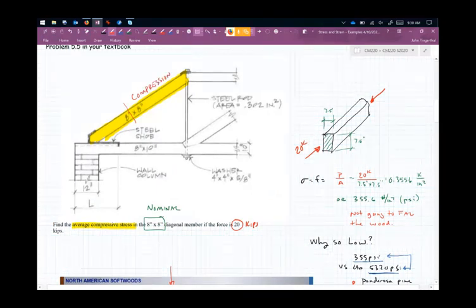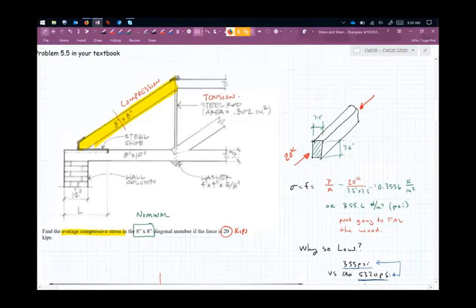But then we've got these rods here which would be under tension because they can't buckle. They can be nice and slender. This top one would be under compression. These guys will be under tension primarily because they have to support the bridge deck.